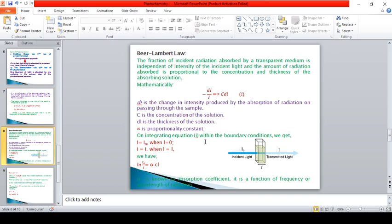The probability or rate of absorption is given by Beer-Lambert law. According to this law, the fraction of incident radiation absorbed by a transparent medium is independent of intensity of the incident light, and the amount of radiation absorbed is proportional to the concentration and thickness of the absorbing solution.